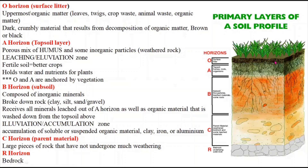We will start from the O horizon, which is the top layer of the soil. The O horizon is the upper layer of the topsoil, which is mainly composed of organic materials such as dried leaves, grasses, dead leaves, small rocks, twigs, surface organisms, fallen trees, and other decomposed organic matter. This horizon is often black, brown, or dark brown in color.